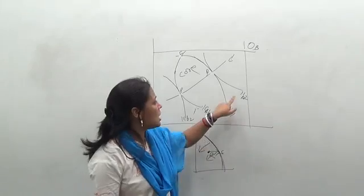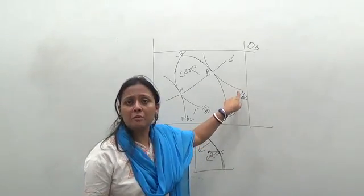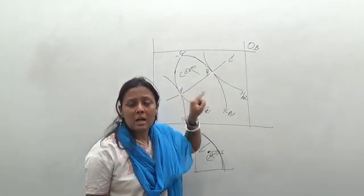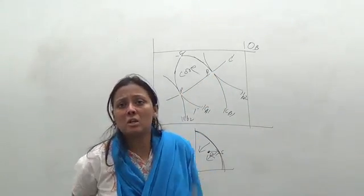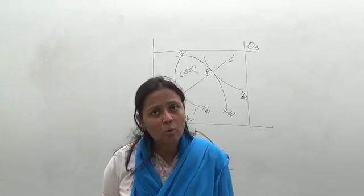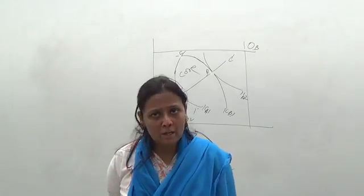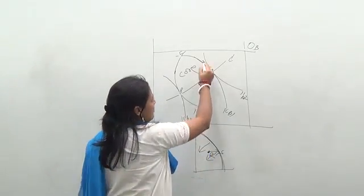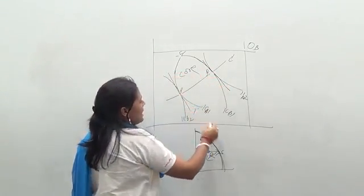So at this point, what is happening? We see that the slope of the indifference curve of individual A and individual B is equating together. And the slope is nothing but the marginal rate of substitution of the two commodities X and Y of individuals 1 and 2.